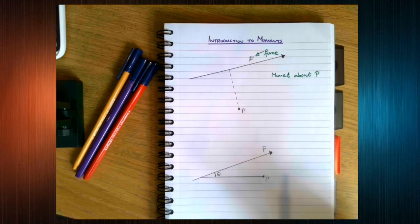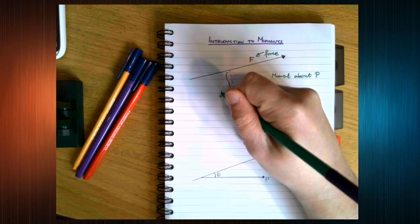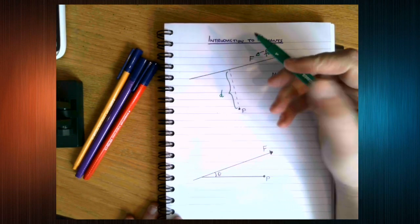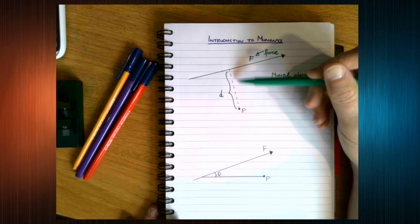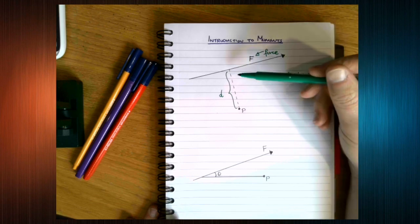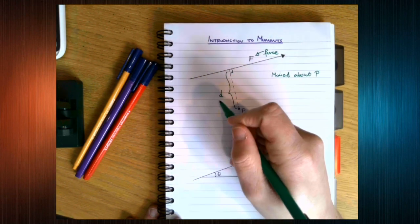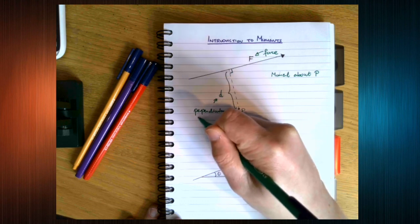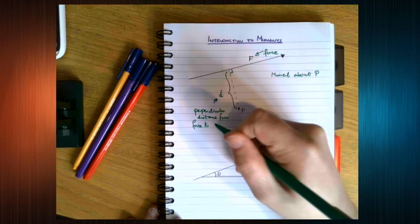But it is a specific distance that we talk about. It is the shortest distance from the force to the pivot, which we call D. So this is the shortest distance. Better is to think about how can we calculate the shortest distance? The shortest distance from a point to a line is at right angles. So D is the perpendicular distance from the force to the point.